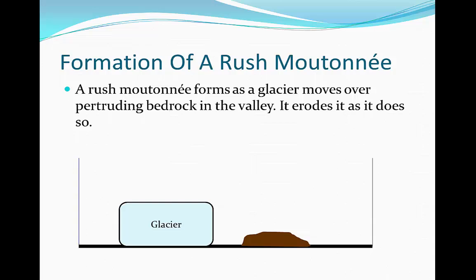I have to stress that the rock is not just typical deposited sediment, which we call moraine, in the valley. The rock, highlighted as brown, is actually attached to the bedrock itself and attached to the valley. That's why it's protruding — because it's coming out of the valley. It's an irregularity.